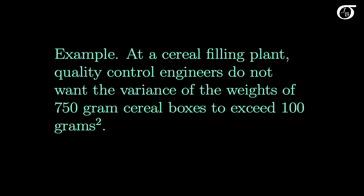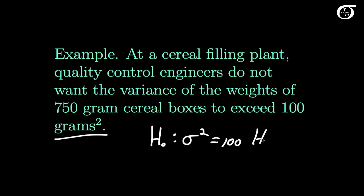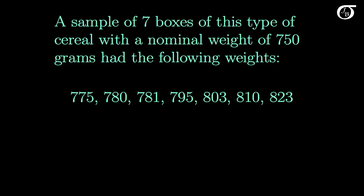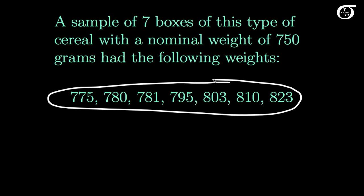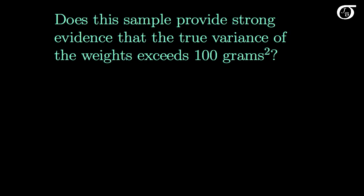Let's look at an example. At a cereal filling plant, quality control engineers do not want the variance of the weights of 750-gram cereal boxes to exceed 100 grams squared — grams squared being the units of variance since variance is a squared quantity. We might test the null hypothesis that the variance equals 100, and see if there is strong evidence the variance is actually greater than 100. A sample of seven boxes had listed weights — real data from boxes I selected from a store. Treating this as a simple random sample, we calculate a sample variance of 315.5714.